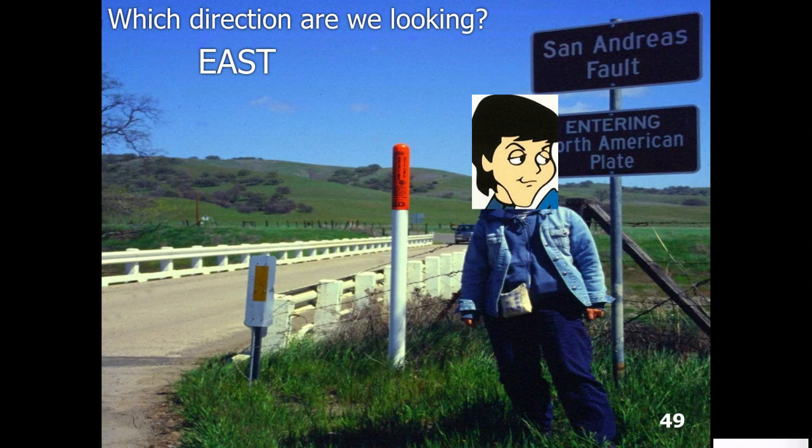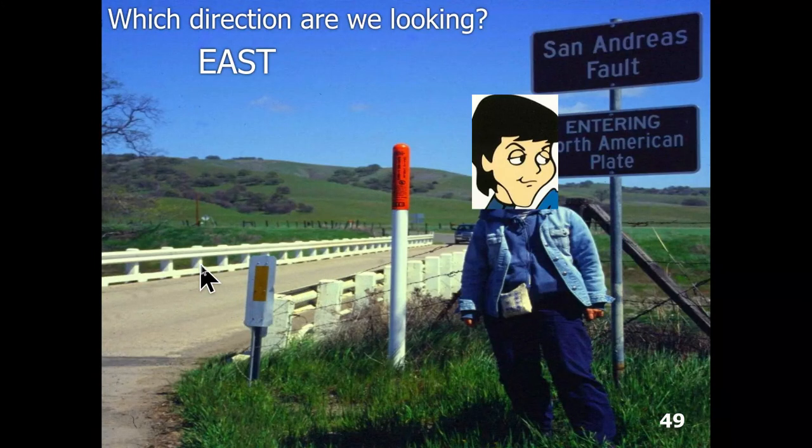You travel west on Highway 46 towards Paso Robles, and just before the James Dean Memorial — approximately a mile before it — you make a right turn and head north for about 15 miles, and that'll take you up to Parkfield. Parkfield is significant because it is situated right on the San Andreas Fault. This slide shows the bridge that heads into Parkfield, which lies right on top of the San Andreas Fault, with a little creek below that follows the fault.